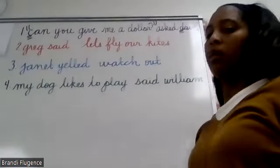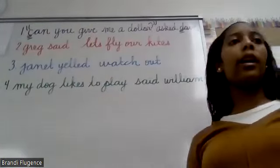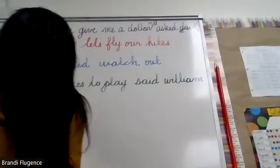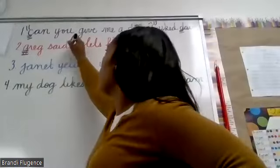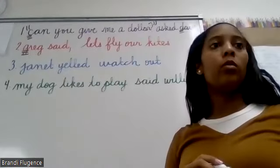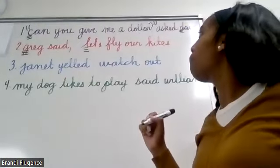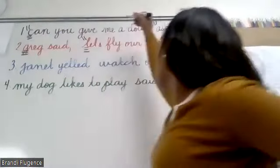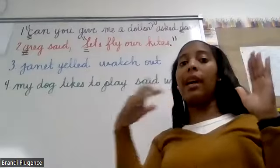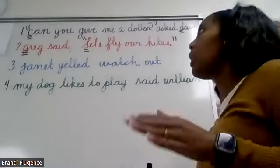Number two: Greg said, 'Let's fly our kite.' Capitalize the first letter G in Greg. Remember guys, if who is speaking comes first, put a comma after their name. Then open quotation marks before 'Let's,' capitalize the L, end with a period inside the quotation marks. Remember, your punctuation goes inside the quotation marks, not outside.